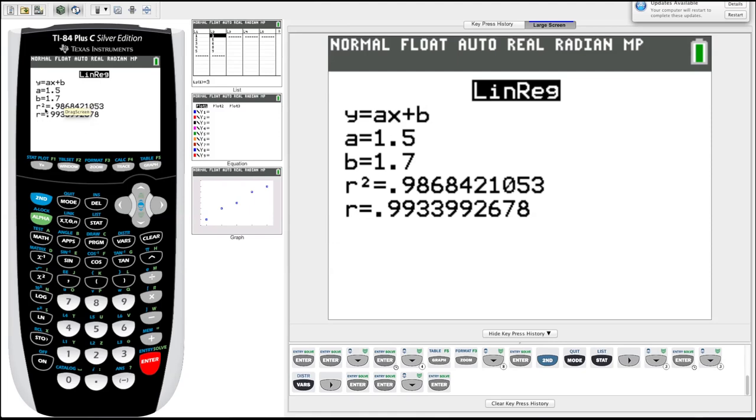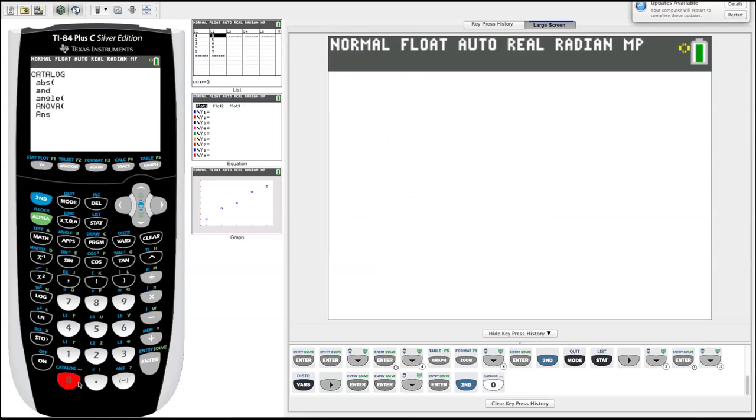Then we have our r squared and our r. You'll remember that those are a measure of how well the data fits to the line. 0.9, pretty good, 0.99. If you don't see those on your first go through, you've got to hit this second button, go down to zero where it says catalog, second zero.